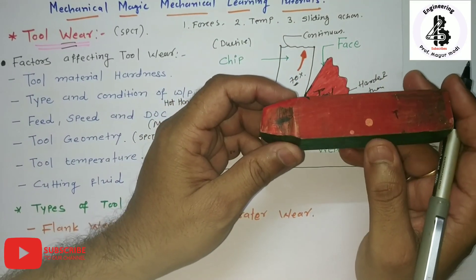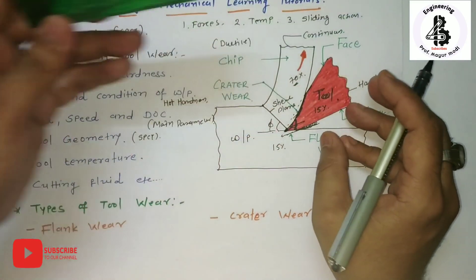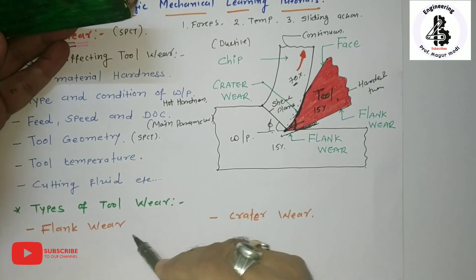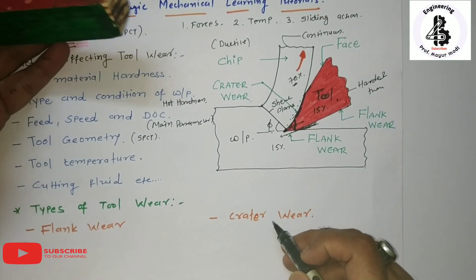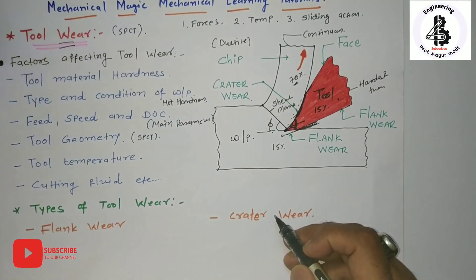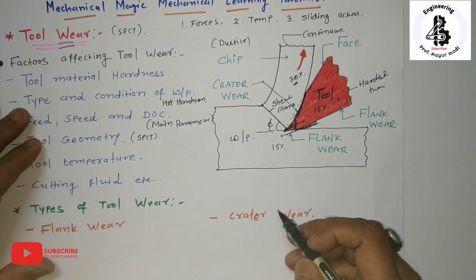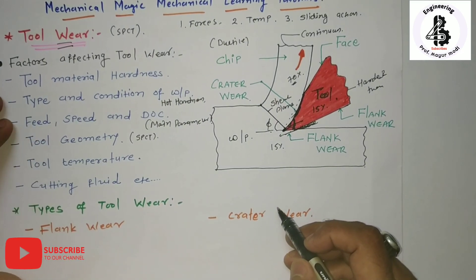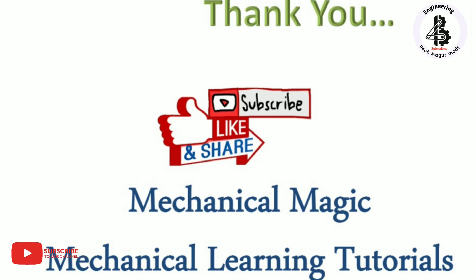So these are the two kinds of wear that take place in single point cutting tools: flank wear and crater wear. If you like this video, please subscribe and share Mechanical Magic - Mechanical Learning Tutorials. Thank you very much.